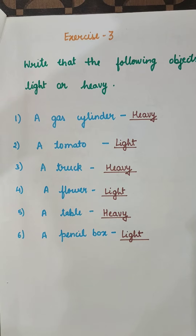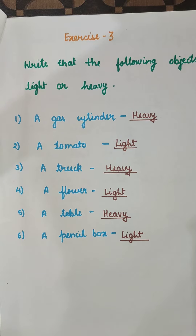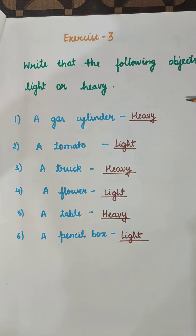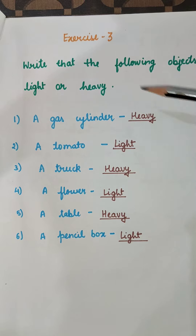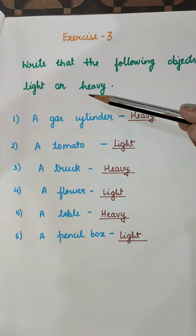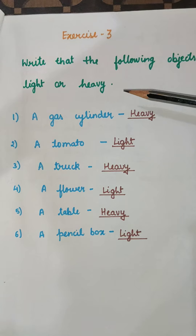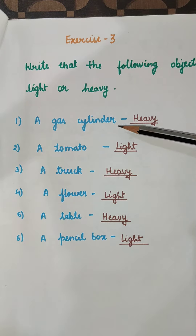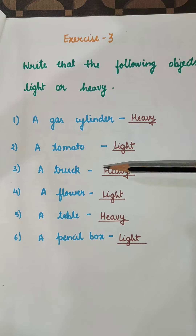Write that the following objects are light or heavy. Heavy means objects which have more weight — that is heavy. Light means which has less weight — that is light. A gas cylinder is having more weight, so this is heavy.